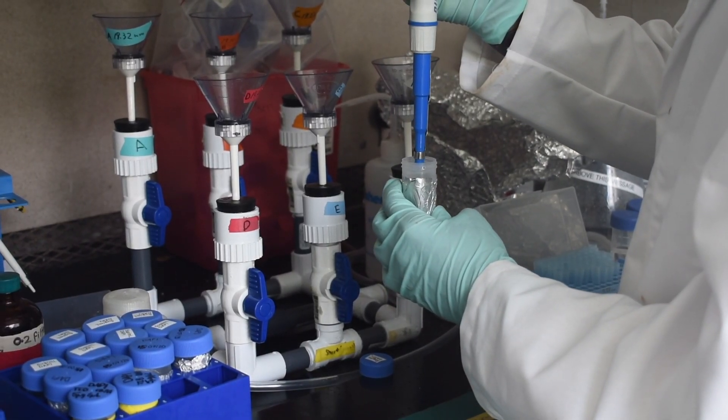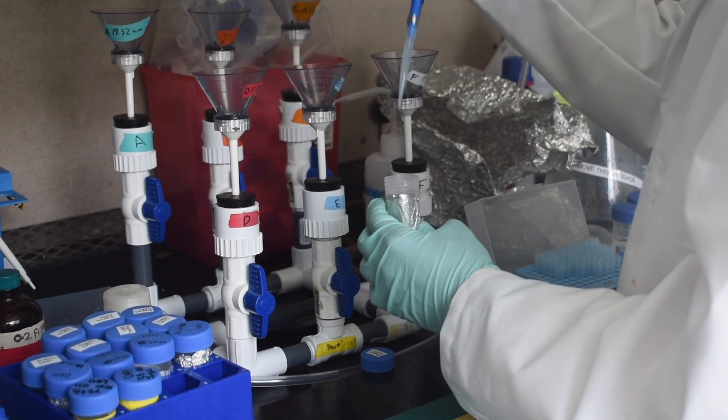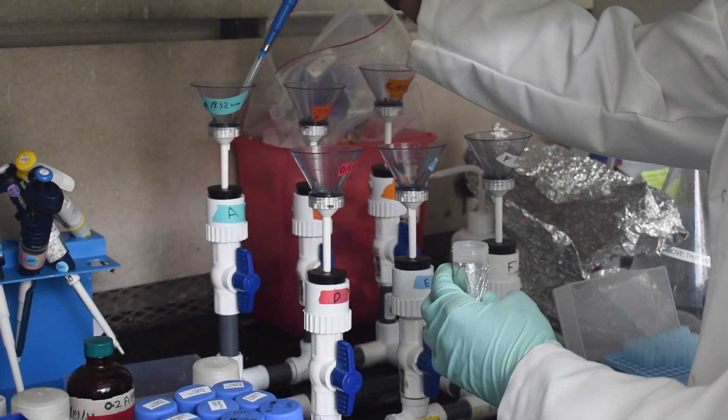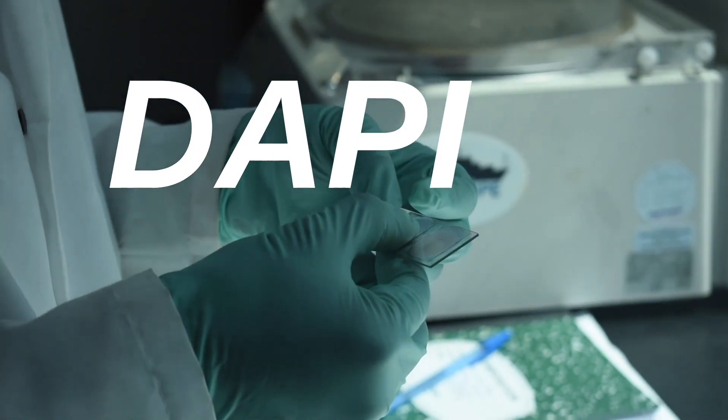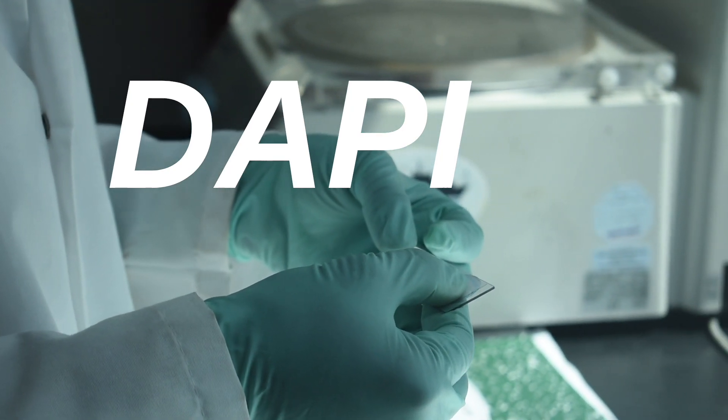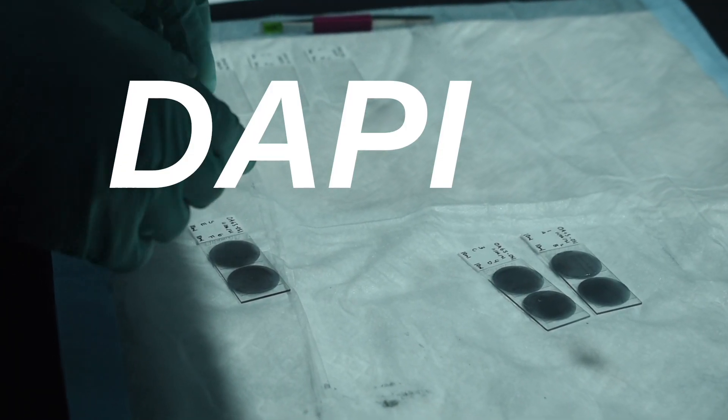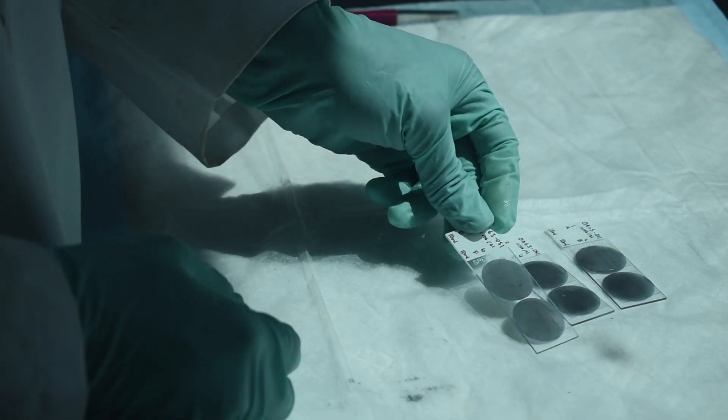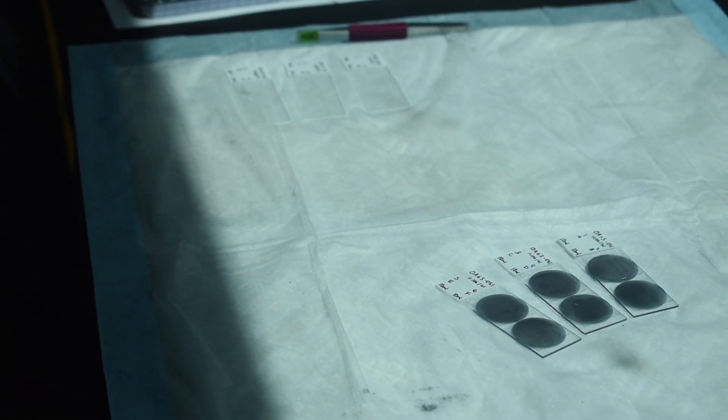This protocol is used for enumerating bacteria on the microscope and we use a stain called DAPI which binds to the DNA of the bacteria and it fluoresces under UV light, a kind of white or pale blue color.